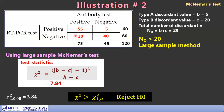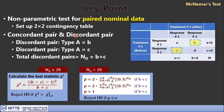Key takeaways: McNemar's test is a non-parametric test for paired categorical data — nominal or ordinal. Set up a 2×2 contingency table, identify concordant and discordant pairs. Discordant pairs are Type A (b) and Type B (c). Based on whether nd ≥ 20 (large sample) or nd < 20 (small sample), use the chi-square formula or the binomial formula respectively. Be careful with the modulus in the chi-square formula.